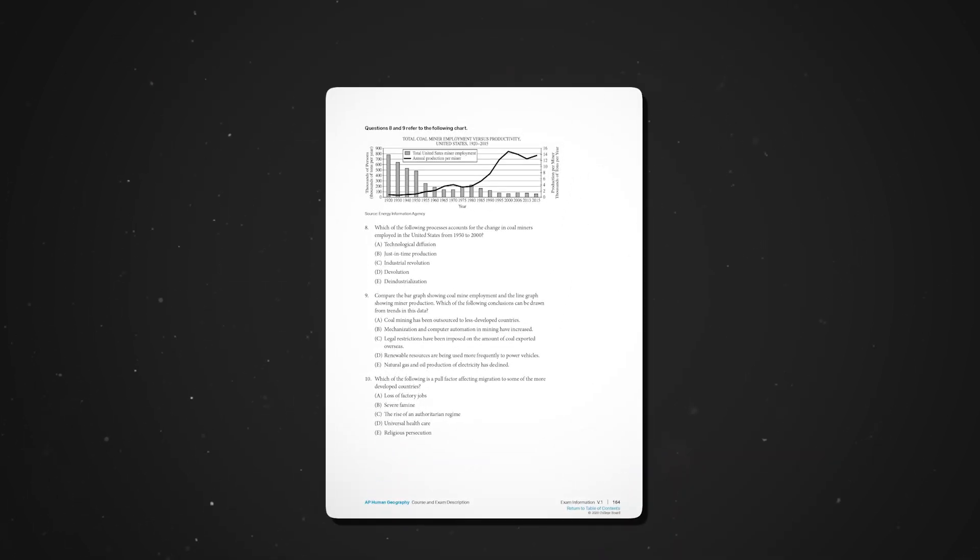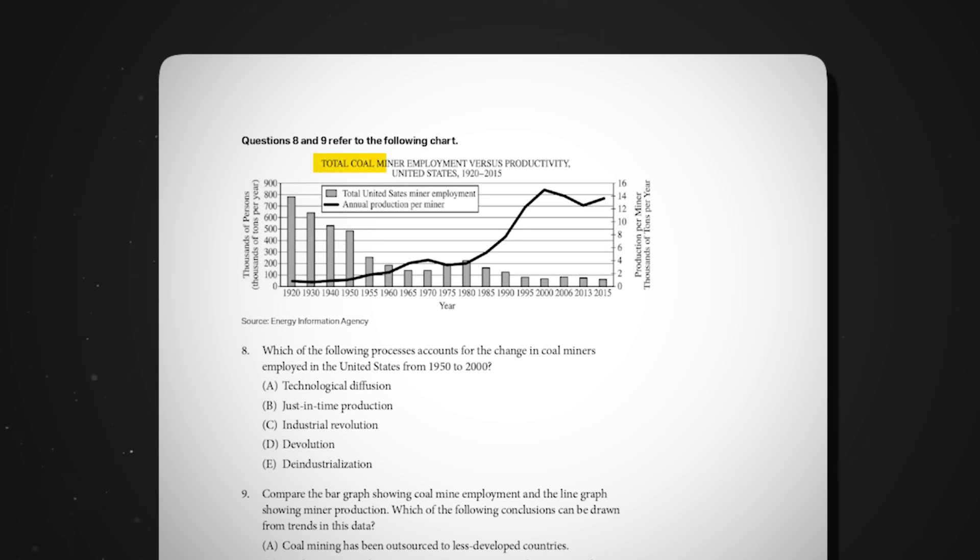For instance, here I can see the stimulus is looking at the total coal miner employment versus productivity. The black line is the production per miner, and the bar graph is the total U.S. miner employment. I can also see the data is in thousands of tons per year and comes from the Energy Information Agency.